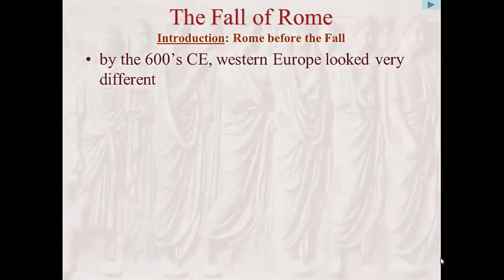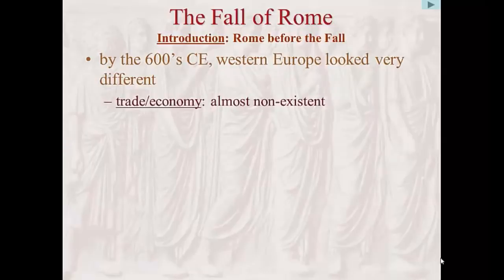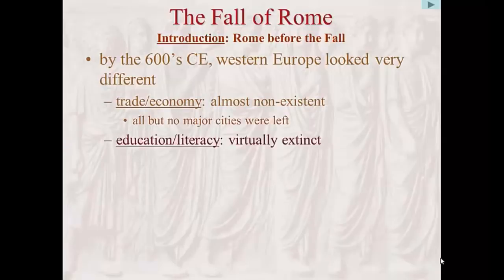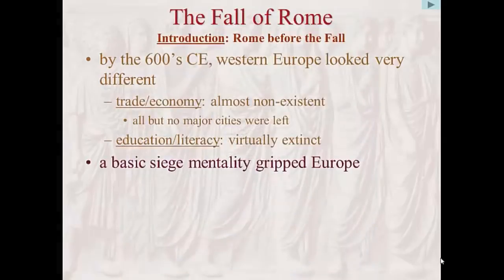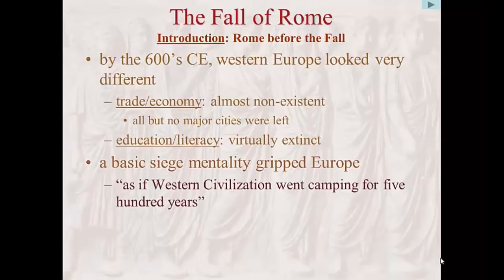By virtually every measurable standard, Western civilization had relapsed severely. Trade had virtually disappeared, taking with it the European economy and the basis of civilized life. Because most of the populace was mired in dismal squalor, unable to travel or attend school, education and literacy were all but relics of the past. Without any way to see their situation from a larger geographical or historical perspective, a basic siege mentality gripped their world. On the surface, the invasions of non-Roman outsiders had so badly disrupted the region that, in the words of one modern historian, it was as if Western civilization went camping for 500 years.